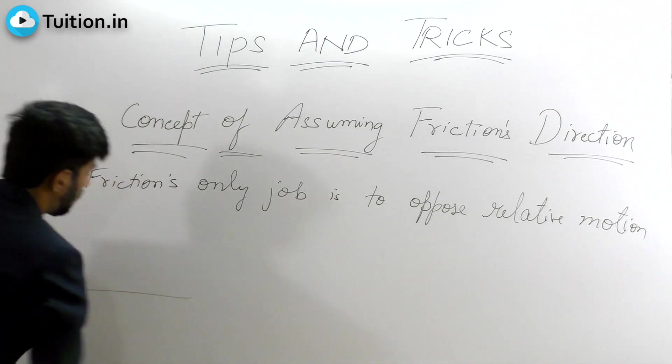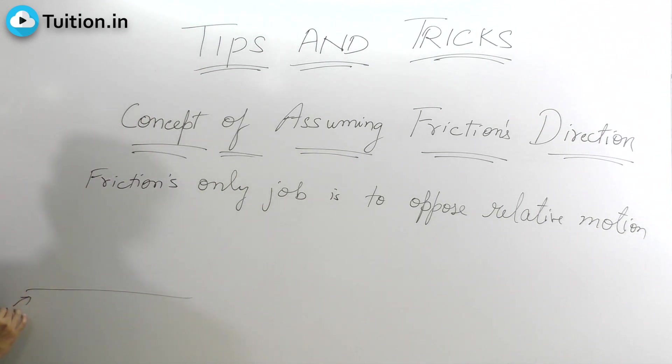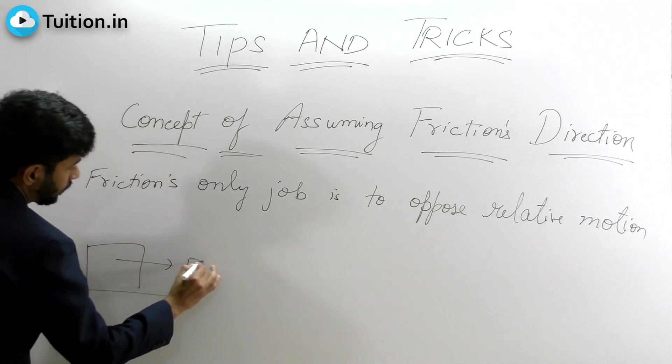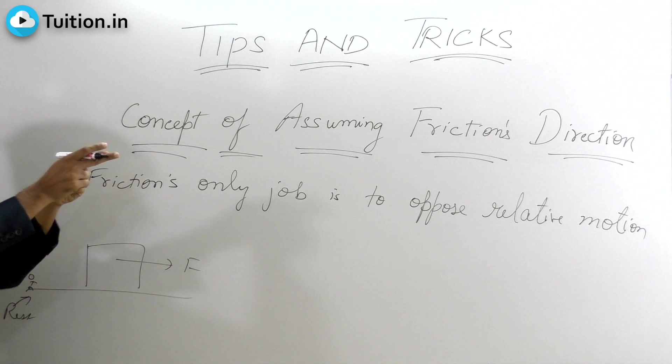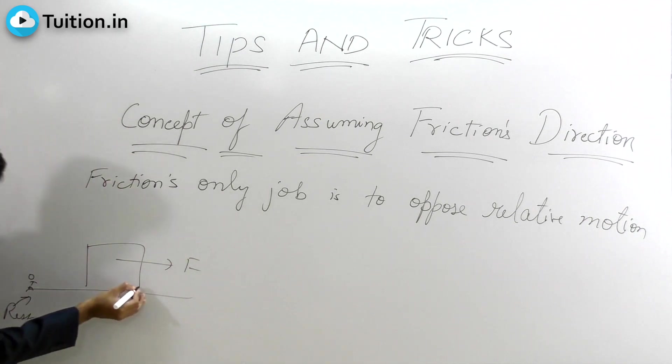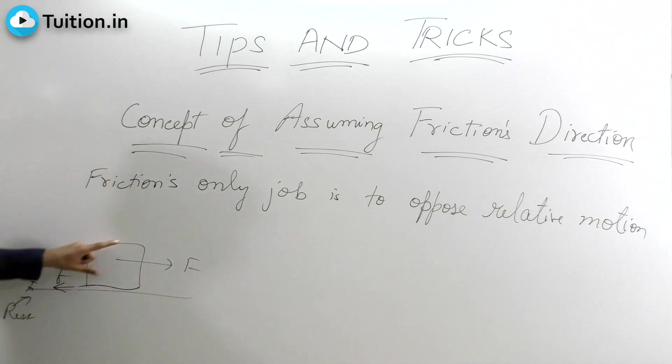Let's say your ground is at rest. If I have a block here and I apply some force, then with respect to the ground, if I place myself on the ground and look at the block, the block is appearing to move that side. That's why on the block the friction will act in this direction, because the block with respect to ground is trying to move that side.